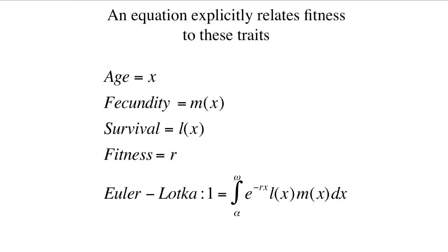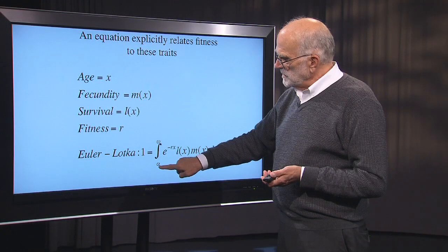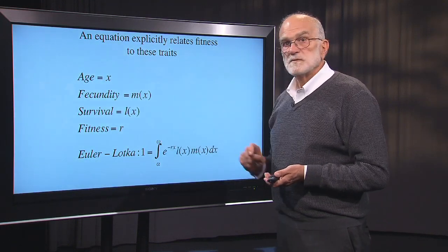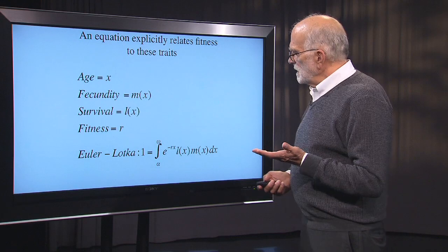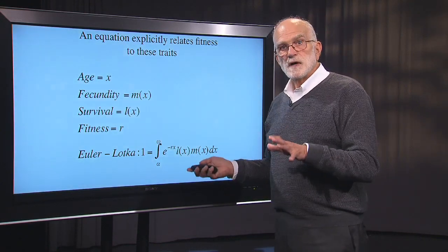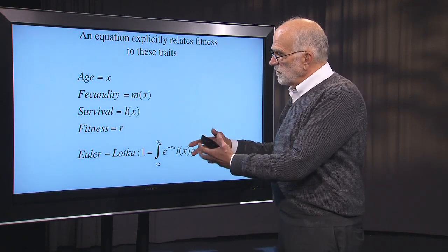Life history evolution all got started with the Euler-Lotka equation. It takes a bunch of life history traits and relates them to fitness. Age is denoted as x, fecundity as m of x (a function of age), survival as l of x (a function of age), and fitness is denoted as r — the exponential growth rate of a population with particular life history characteristics. The Euler-Lotka equation says that when a population is at equilibrium, the integral over reproduction times survival, discounted by e to the minus rx, summed between age at first birth (alpha) and age at last birth (omega), will equal 1. Basically, a stable population will grow smoothly and exponentially with all its parts connected in this relationship.